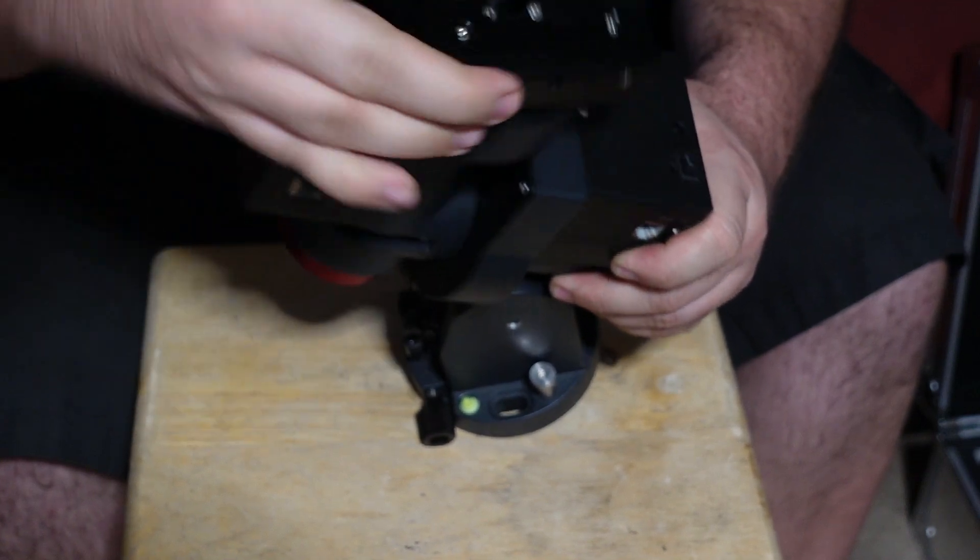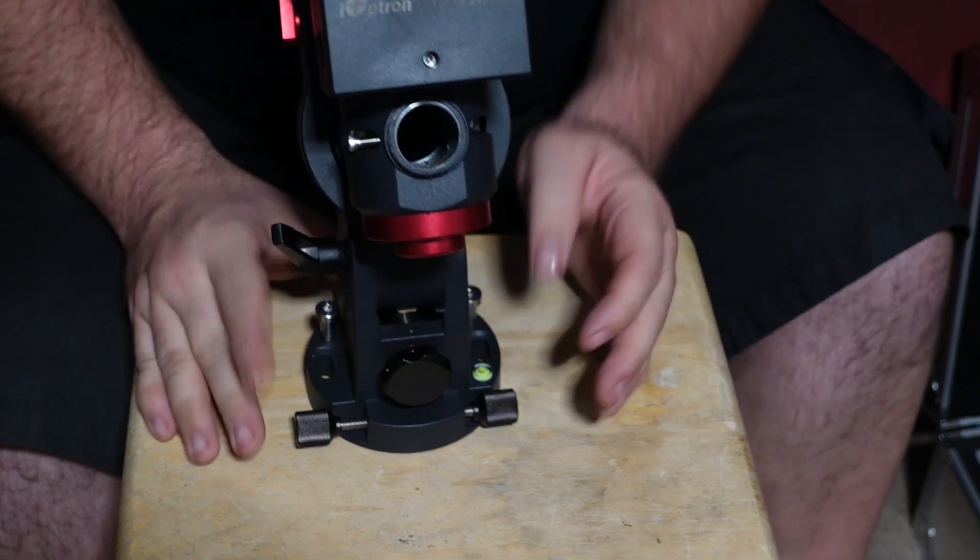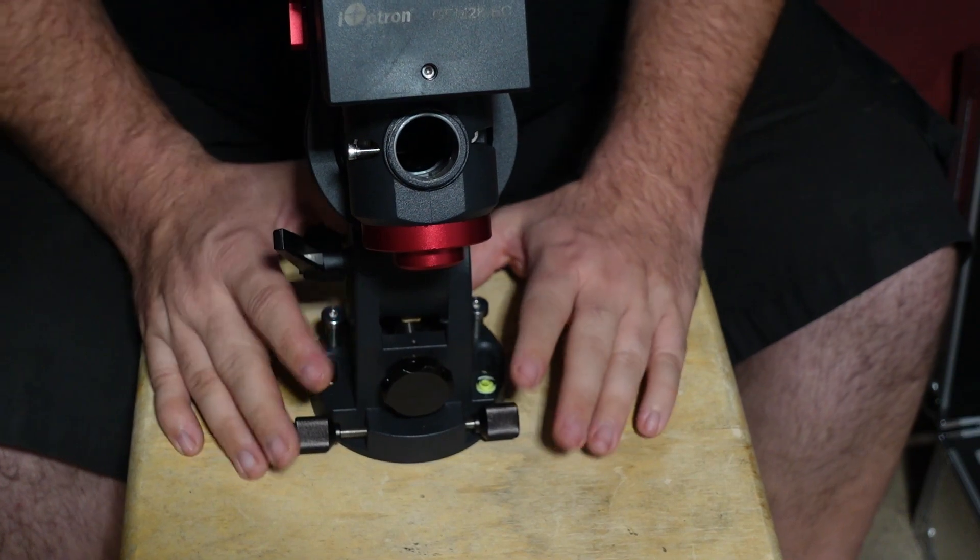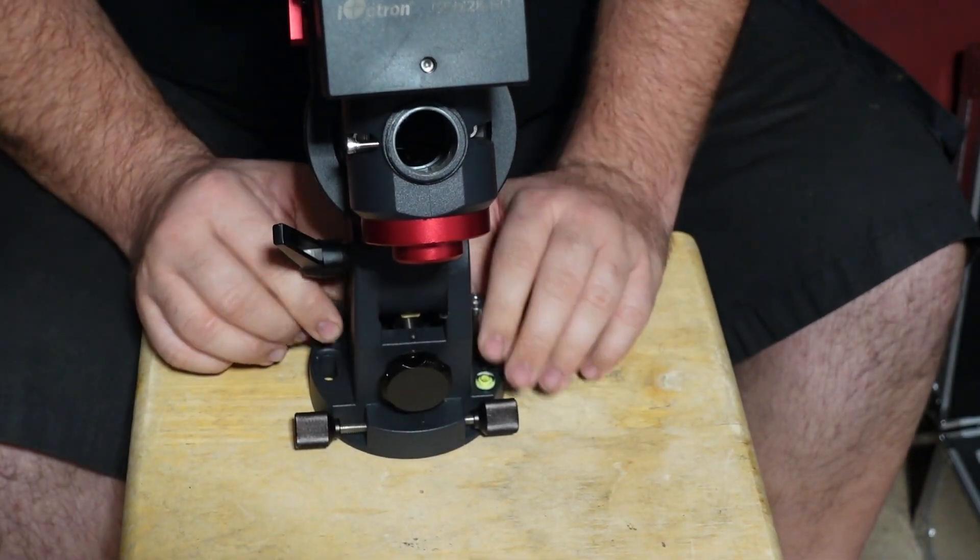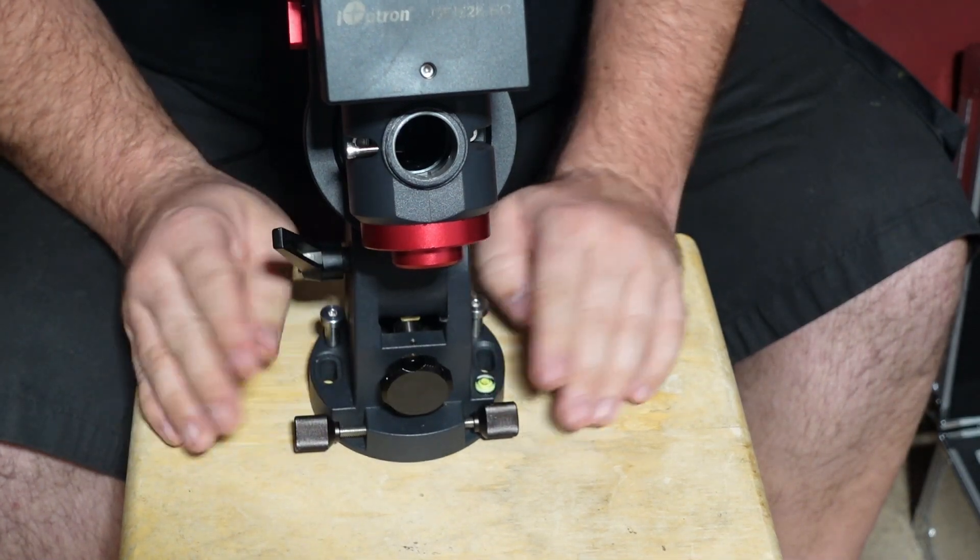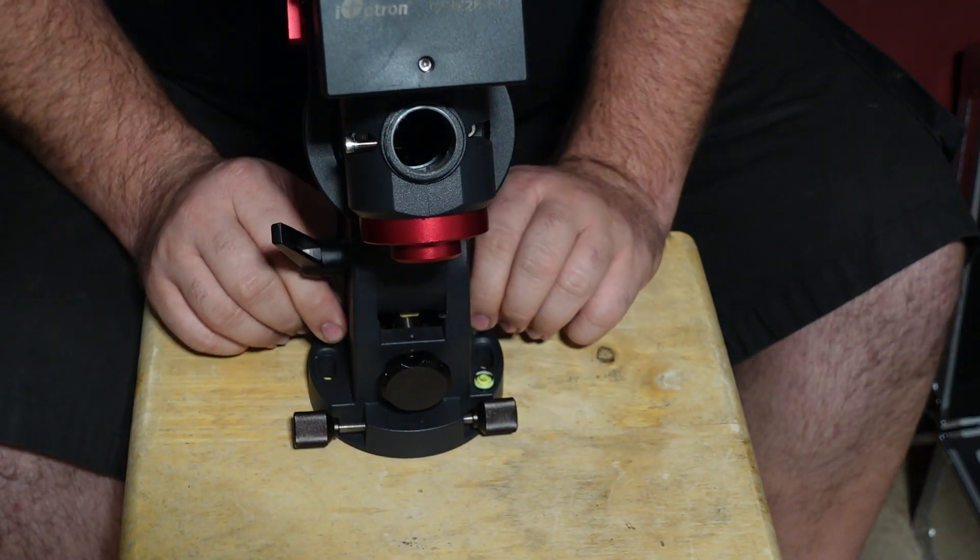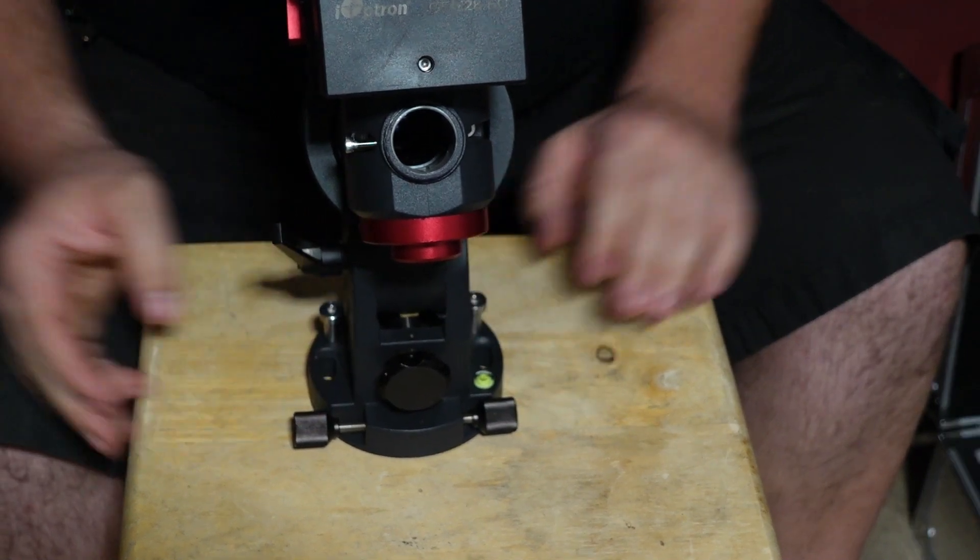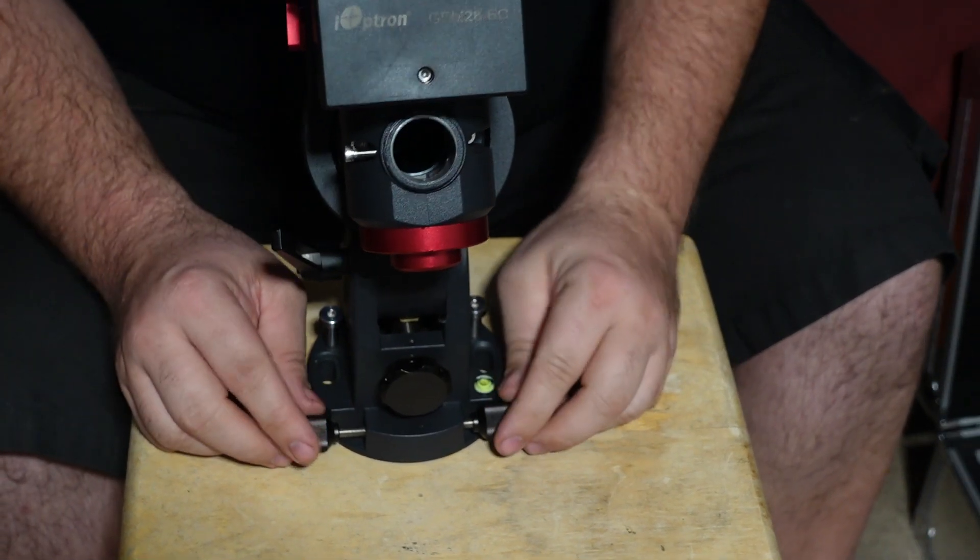But overall, the mount is advertised as an RMS of 0.3. I have not experienced that yet. I've used the mount probably three times now in my backyard with the best polar alignment I can get with my pole master. The best guiding that I've gotten on PHD2 was about 1.3, 1.2 to 1.5 RMS.